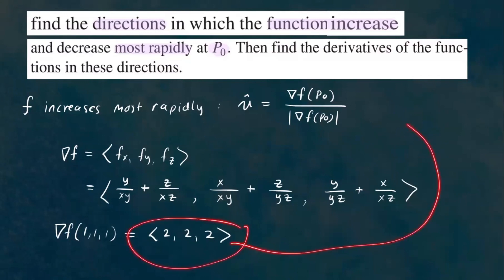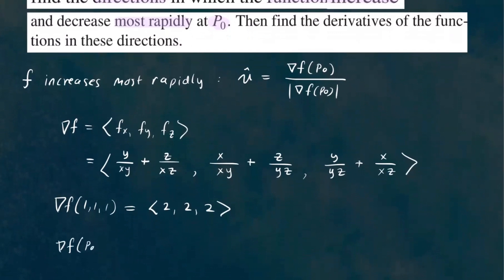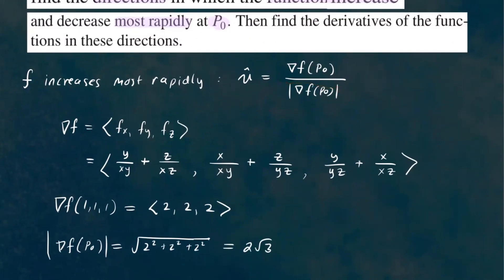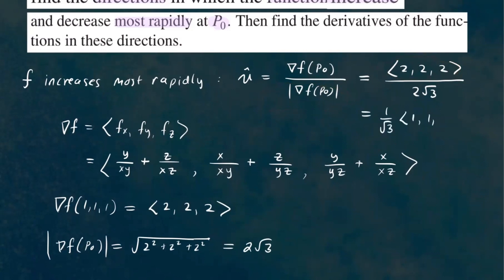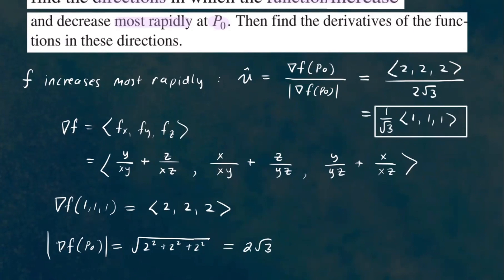That's what we substitute into our unit vector formula. Now we want to make this vector a unit vector, so we need its magnitude. The magnitude of the gradient at P0 is the square root of 2² + 2² + 2², which gives us 2√3. So f is increasing most rapidly in the direction of (2, 2, 2) divided by 2√3. Since all components have 2 in common, we factor out the 2 and cancel it, leaving (1/√3) times the vector (1, 1, 1). This is our direction for the greatest increase of the function.